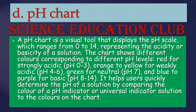pH chart: a pH chart is a visual tool that displays the pH scale, which ranges from 0 to 14, representing the acidity or basicity of a solution. The chart shows different colors corresponding to different pH levels — red for strongly acidic, orange to yellow for weakly acidic, green for neutral, and blue to purple for basic. It helps users quickly determine the pH of a solution by comparing the color of a universal indicator to the colors on the chart.